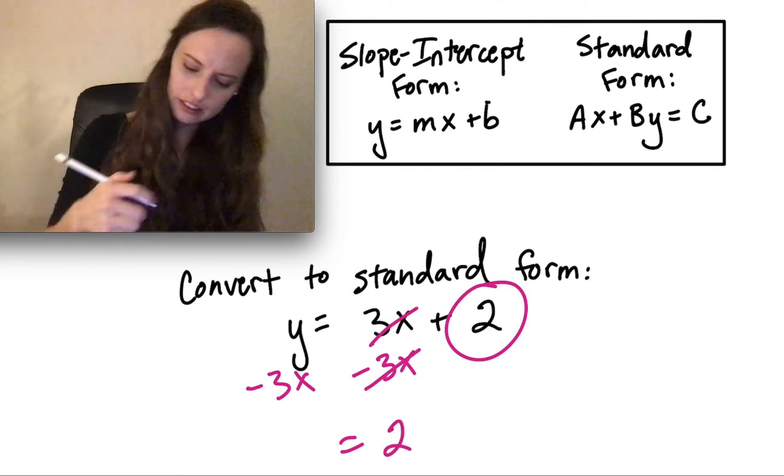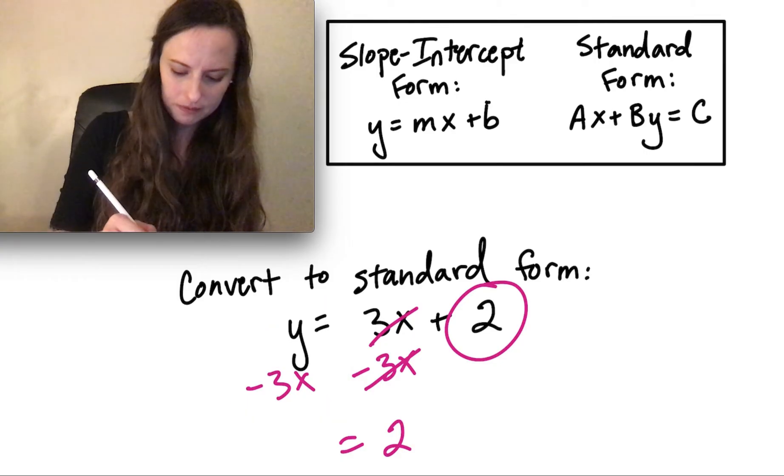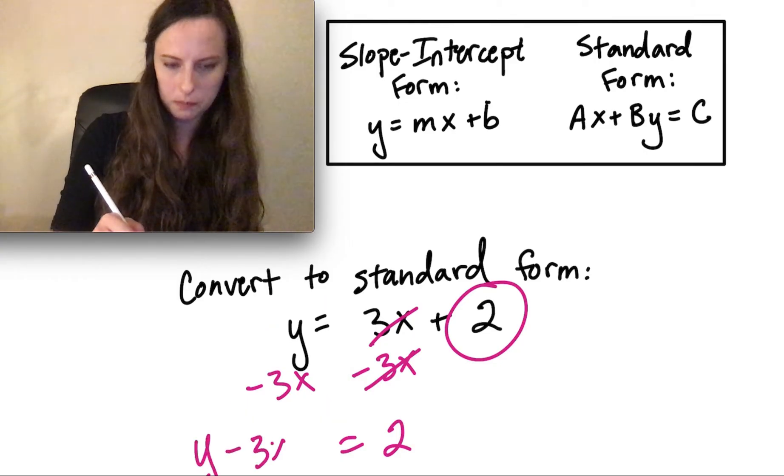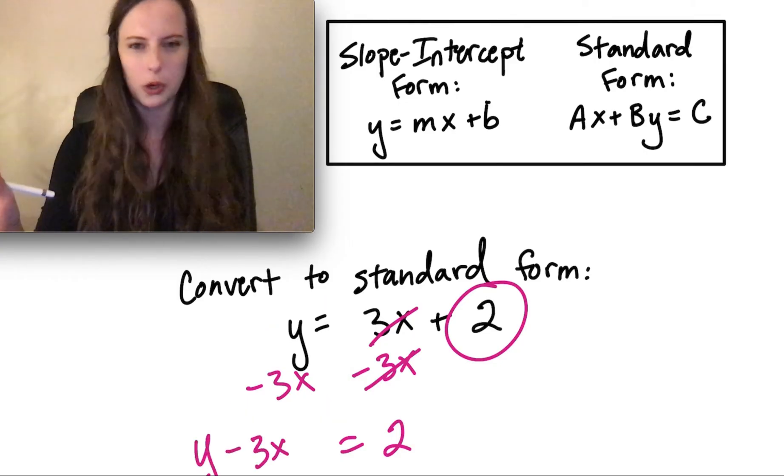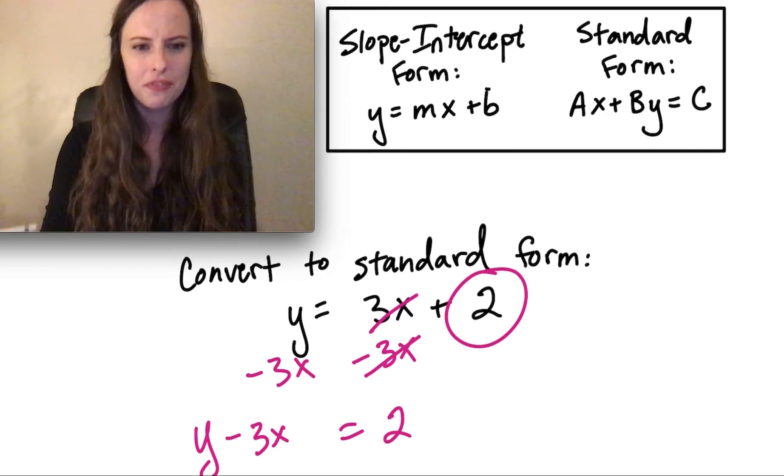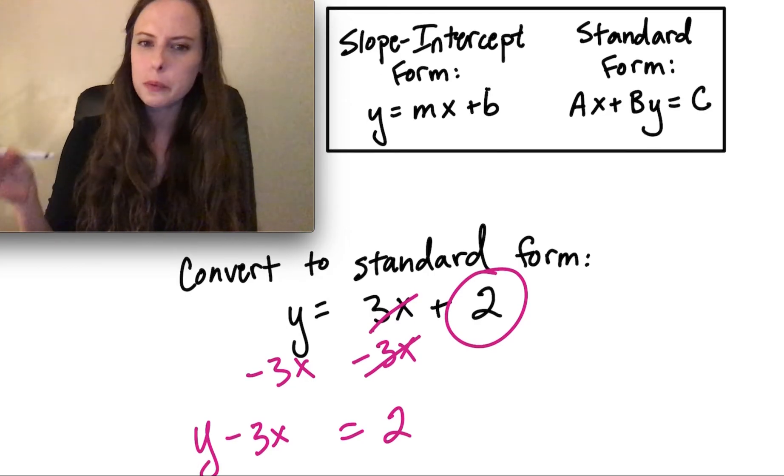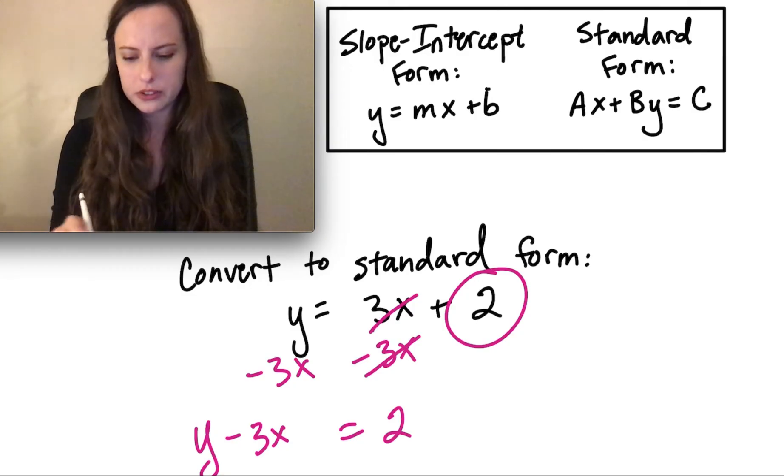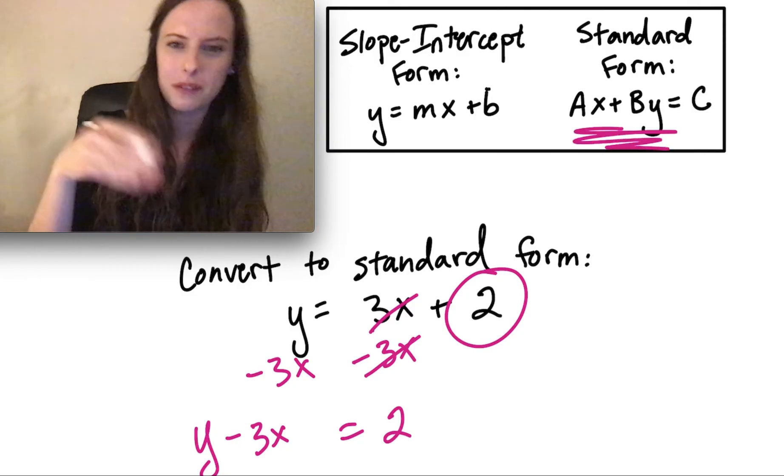We're left with just that constant 2 on one side of the equal sign all by itself. And on the other side, we have y minus 3x. Now, y minus 3x is a perfectly valid and correct way of writing your answer.